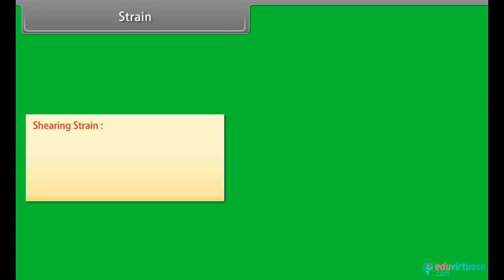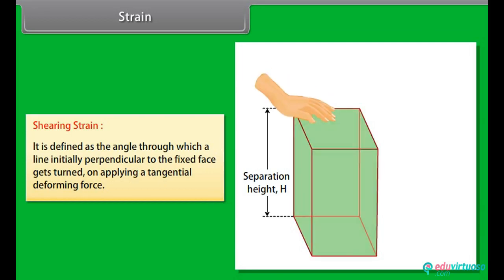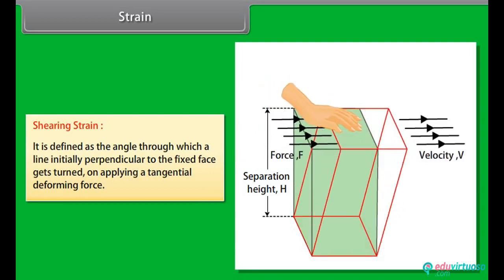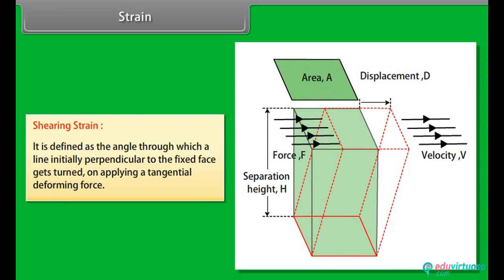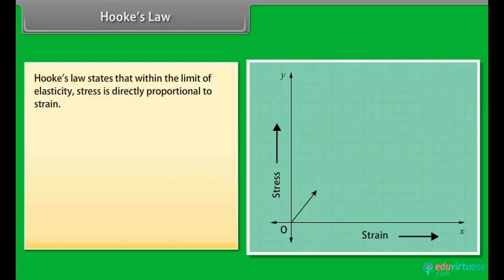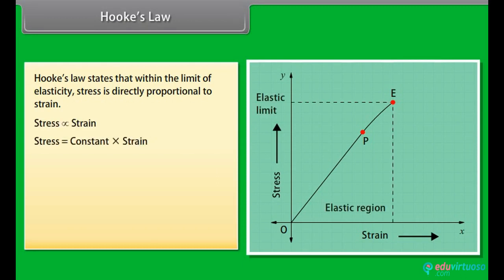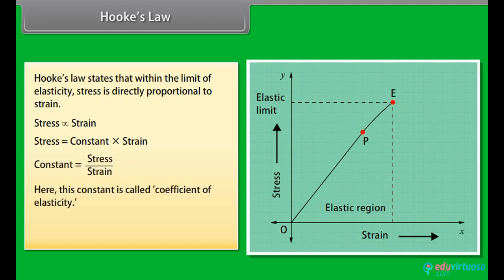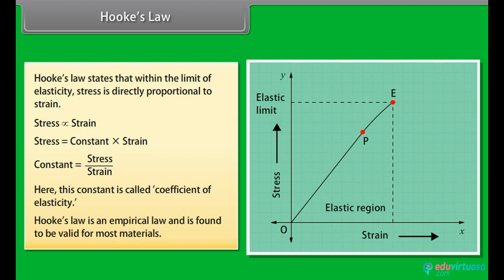Shearing strain is defined as the angle through which a line initially perpendicular to the fixed face gets turned on applying a tangential deforming force. Hooke's Law states that within the limit of elasticity, stress is directly proportional to strain. Stress equals a constant multiplied by strain, where this constant is called the coefficient of elasticity. Hooke's Law is an empirical law and is found to be valid for most materials.